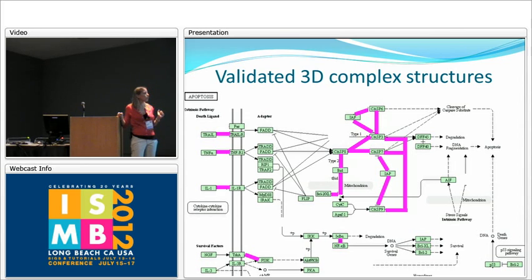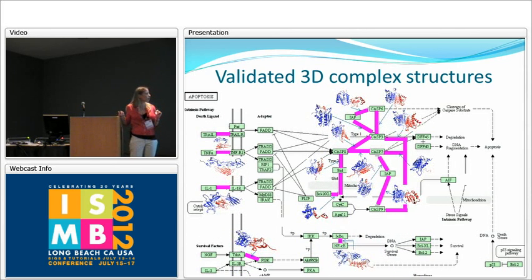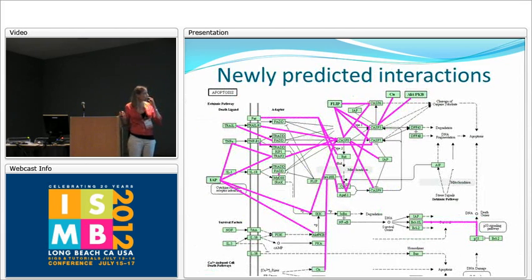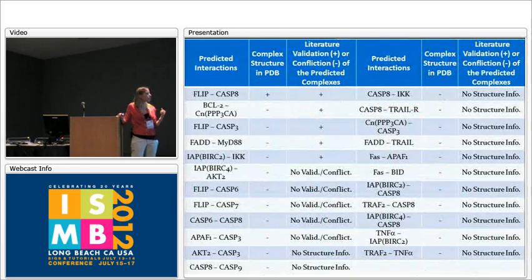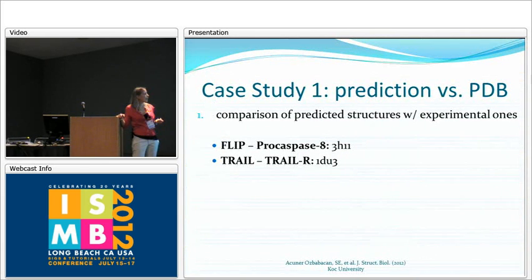The 27 new interactions were not shown on the map originally, but were found to be also interacting in the STRING database. When we look for validation of the predicted complex structures, we can find information for these cases — sometimes there is no structural information available, and sometimes they were validated. We can say that we enrich this map by supplying these protein-protein complex structures.